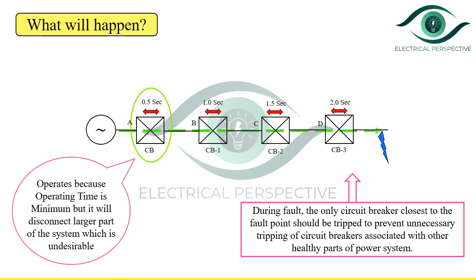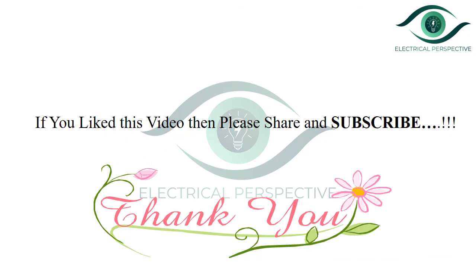We need to follow the basic rule: the relay nearest to the end of the line should have the minimum time setting, and the time settings of other relays should successively increase towards the source end. The drawbacks we have seen can be overcome by incorporating the current grading principle in addition to the time principle, which we will discuss in the next video. This is all about the time graded system. If you like this video, please share and subscribe. Thank you.